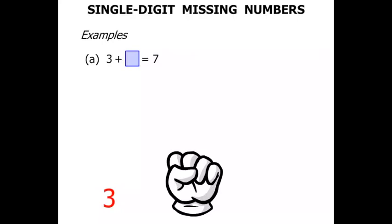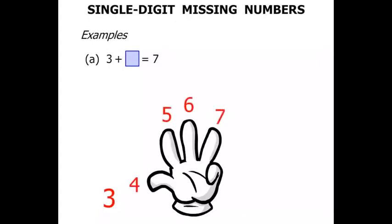So let's add on with our fingers. So we've already got 3 in our mind. So let's start 3, 4, 5, 6, 7. Okay so we've added how many fingers to get to 7? We needed another 4. So let's write 4 as our answer there.